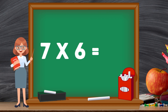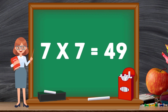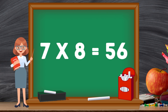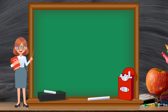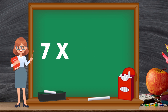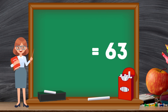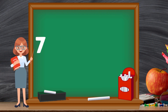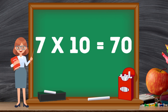7 sixes are 42. 7 sevens are 49. 7 sevens are 49. 7 eights are 56. 7 nines are 63. 7 nines are 63. 7 tens are 70. 7 tens are 70. See you next time.